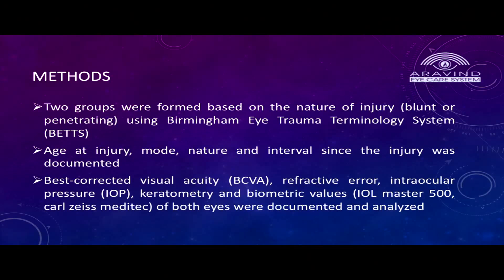We formed two groups and defined blunt and penetrating according to BETTS classification. Age at injury, mode, nature, and interval since injury were documented. Best corrected visual acuity, refractive error, intraocular pressure, keratometry, and biometric values of both eyes were documented and analyzed.